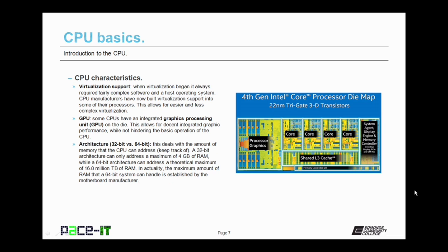Some CPUs have virtualization support. When virtualization began, it always required fairly complex software and a host operating system. CPU manufacturers have now built virtualization support into some of their processors. This allows for easier and less complex virtualization. Some more modern CPUs are now coming with a GPU, a graphics processing unit, on the die. This allows for decent integrated graphics performance while not hindering the basic operation of the CPU.